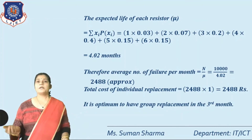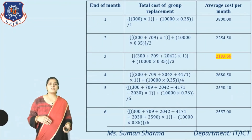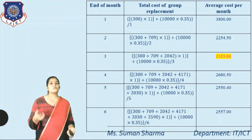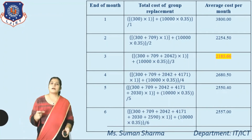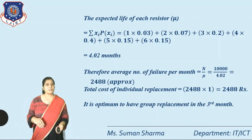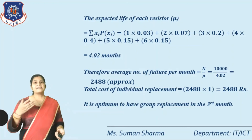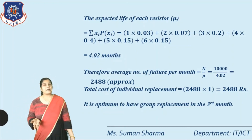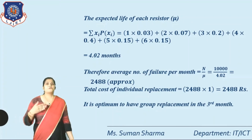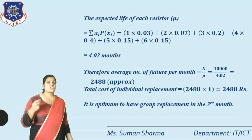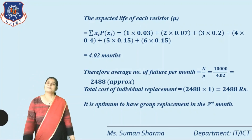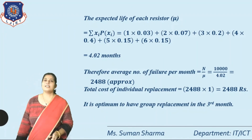It is optimum to have group replacement in the third month because the individual replacement cost is rupees 2488 per month, while the group replacement cost at month 3 is only 2183.66 — the minimum. If probability is not given in the question, first find it, verify the sum equals 1, then start the solution. This topic will be continued in the next lecture. Thank you for watching.